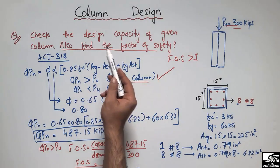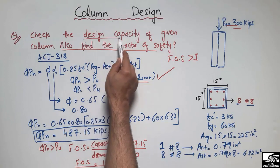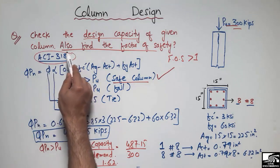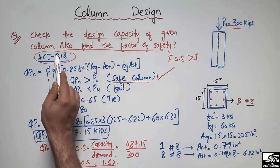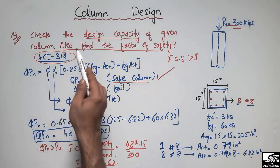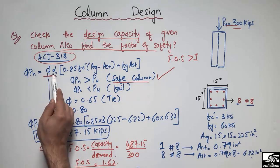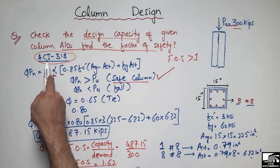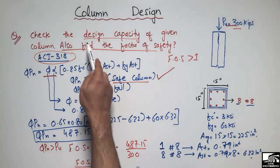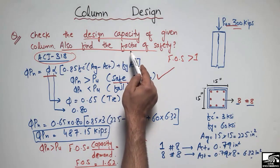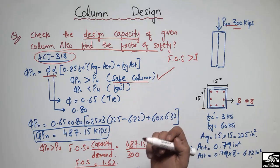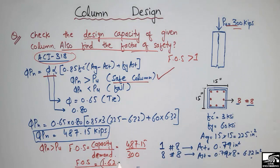I hope you understand how to check and find the design capacity of a reinforced concrete column using this formula. Note that these reduction factors are according to the ACI code. If you are using a different code, these values may change. Using ACI, you can find the design capacity and factor of safety — our column is 1.62 times safer than the applied demand.